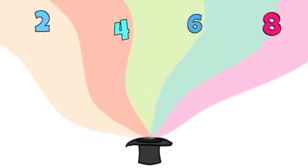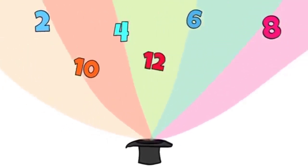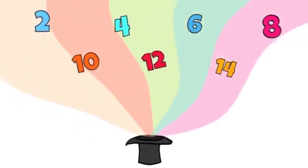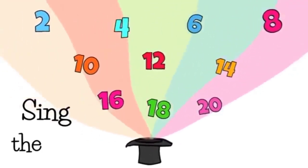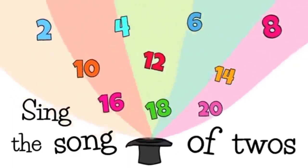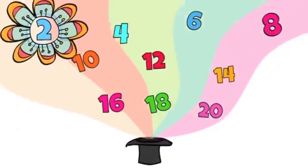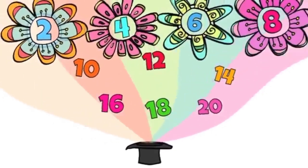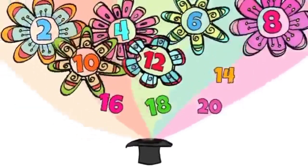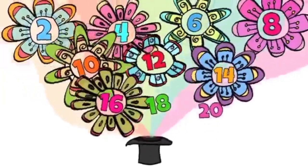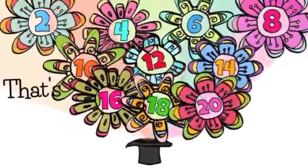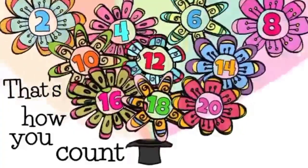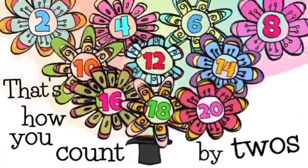Bye bye. 2, 4, 6, 8, 10, 12, 14, 16, 18, 20. Sing the song of twos. 2, 4, 6, 8, 10, 12, 14, 16, 18, 20. That's how you count by twos.